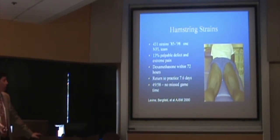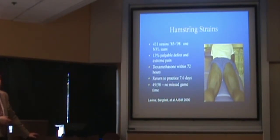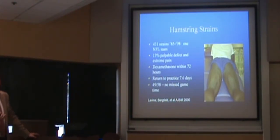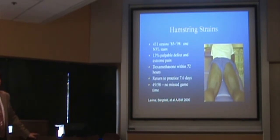Hamstring strains are another really common problem around the hip — primarily proximal hamstring strains, though mid-substance also occurs. I did my fellowship at the Cleveland Clinic with John Birchfeld, who took care of the Cleveland Browns for a long time. He looked at 4 to 31 strains and was meticulous about getting those guys back sooner. Only 13% of patients have a palpable defect. I try to identify whether it's a medial hamstring strain — semimembranosus/semitendinosus — or lateral, involving the biceps.